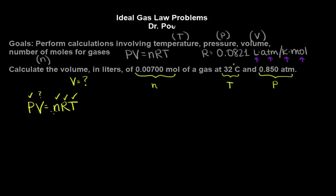And now all we have to do is plug and chug, and there's two ways to do this. You can plug in the numbers first and then rearrange to solve for V, or you can rearrange to solve for V first. So that's the way I'm going to do it this time. P's cancel, V equals nRT over P.